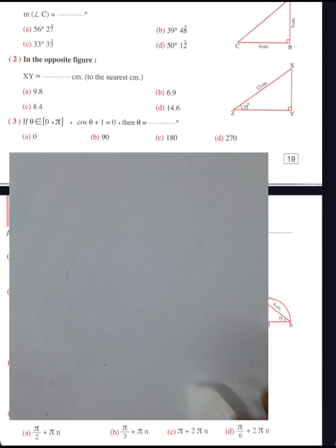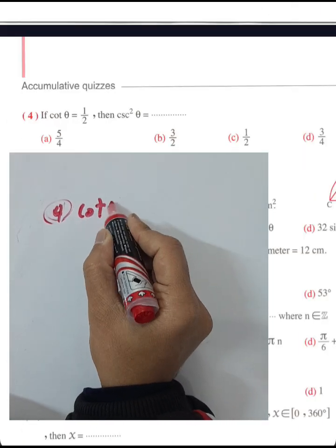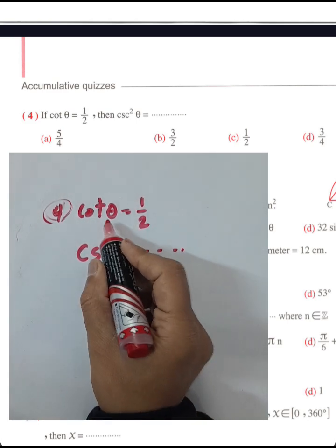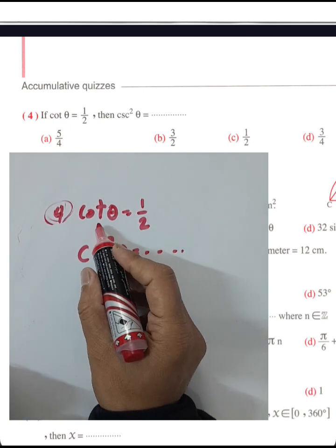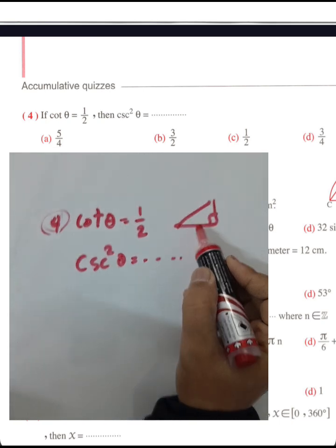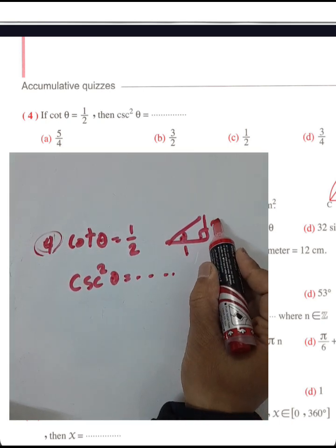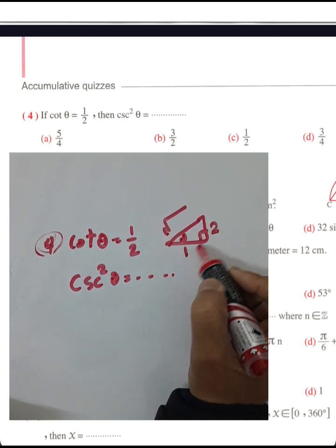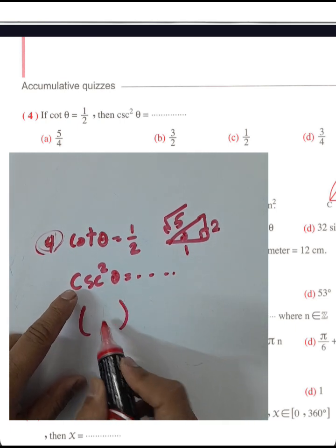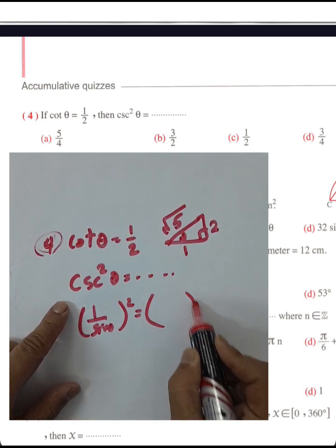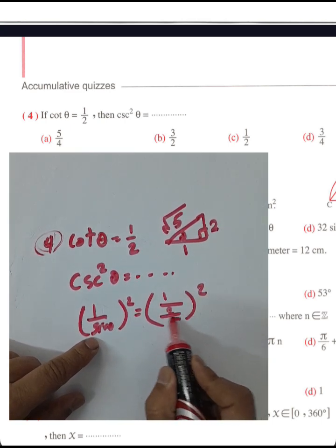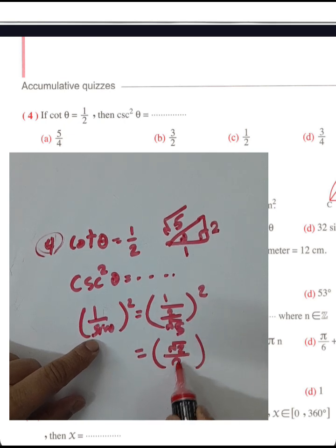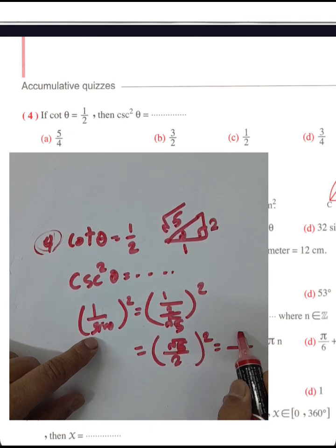Question number four: given cot theta equals one half, find cosine squared theta. We know cot is adjacent over hypotenuse, so we can draw a right triangle with angle theta. The hypotenuse equals the square root of four plus one, which is the square root of five. Since cosecant is the inverse of sine, sine theta equals two over root five. Therefore cosine squared theta equals root five over two, all squared, which gives five over four.